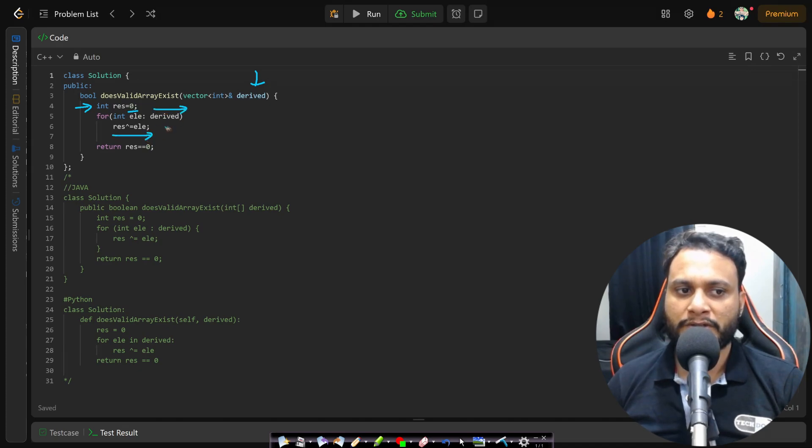So I will just be finding the XOR of each of the items. Since every item is expected to occur two times, if the derived array was taken from a valid original array, definitely the result will be 0. If it is not 0, then that means the derived array is not valid, and therefore we need to return false. This is the entire code, and I hope you are able to understand it.